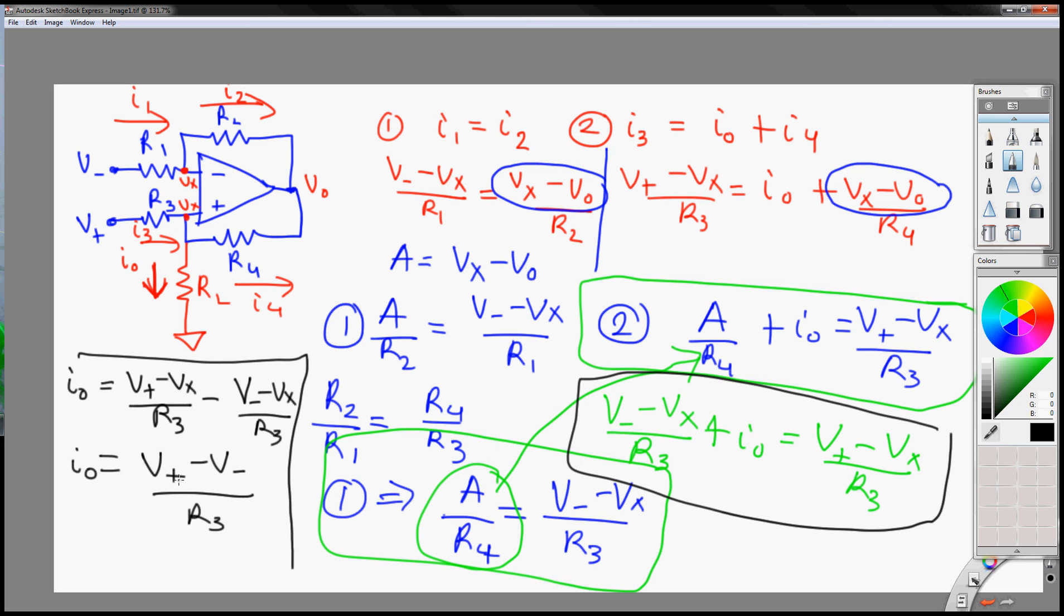Alright, so what's our gain? Our gain is 1 over R3. Since V plus minus V minus is our input, and this is your output. So this has to be your gain. 1 over R3.